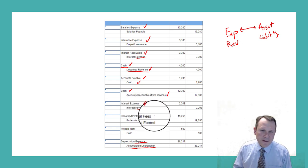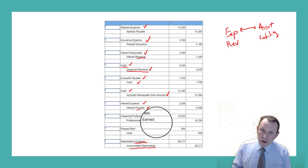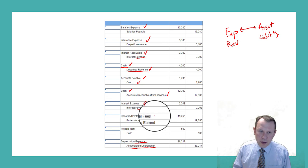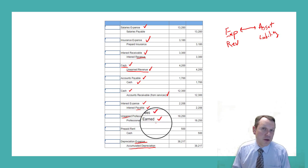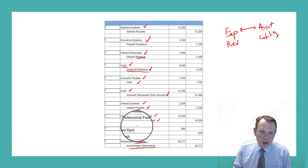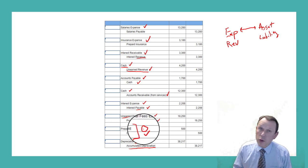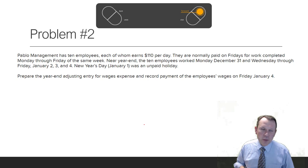Unearned professional fees and professional fees earned: we've actually provided the services, so we debit the unearned revenue liability to reduce it and credit fees earned — now recognized as revenue. The last one is prepaid rent and cash: we're paying cash for future rent, not current rent. That prepaid rent is an asset and that's our entry. Moving on to problem number two.